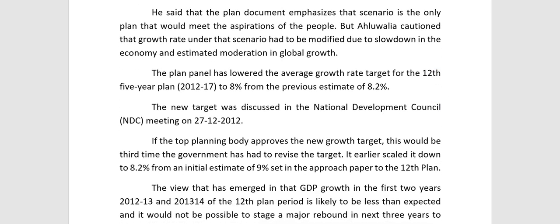Ahluwalia said that the plan document emphasizes that the first scenario — strong inclusive growth — is the only scenario that would meet the aspirations of the people. However, he cautioned that the growth rate under that scenario had to be modified due to the slowdown in the economy and estimated moderation in global growth.